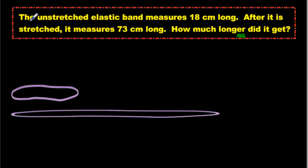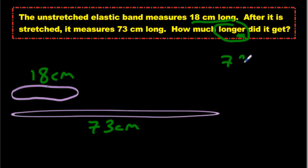Okay, what do we have to take away? Well, it tells us straight up. It says the unstretched, so this one, it's not stretched, elastic band measures 18 centimeters long. So I'm going to write that down. Always write stuff down and show your work. After it is stretched, so I'm assuming it's this one, it measures 73 centimeters. So I'm writing things down. Always write them down. Just don't do it in your head. Do it step by step. How much longer did it get? So we're worried about longer. That means take away. So we're just going to go 73, take away 18.